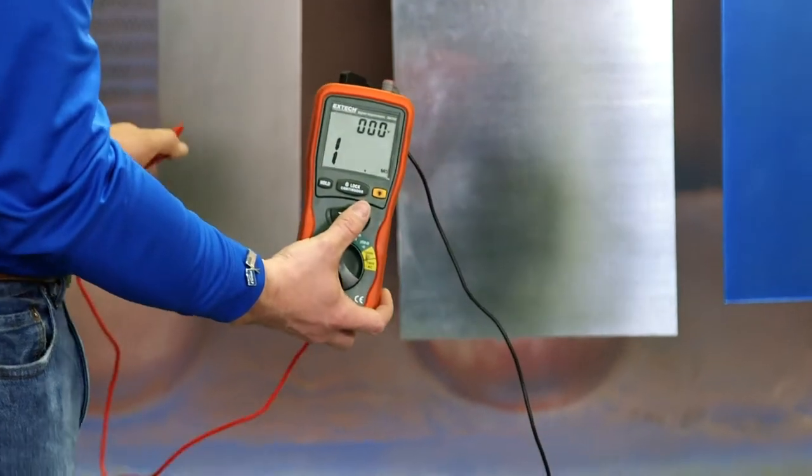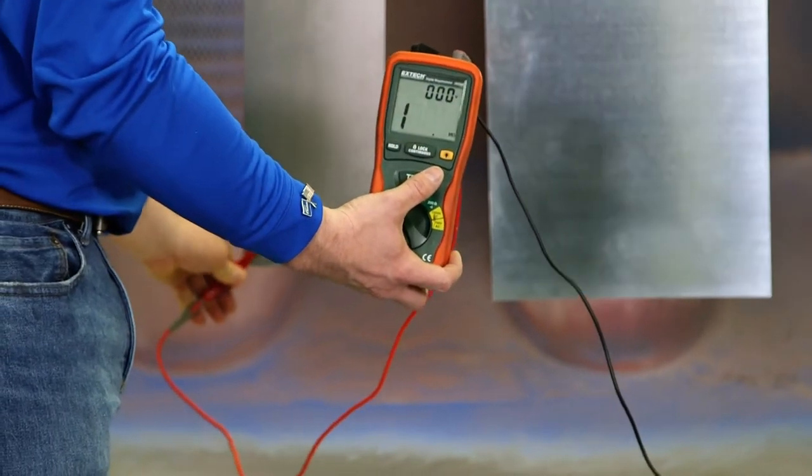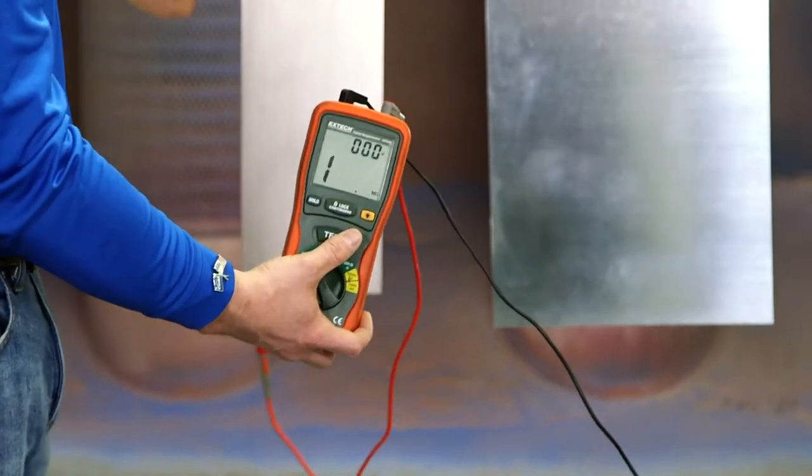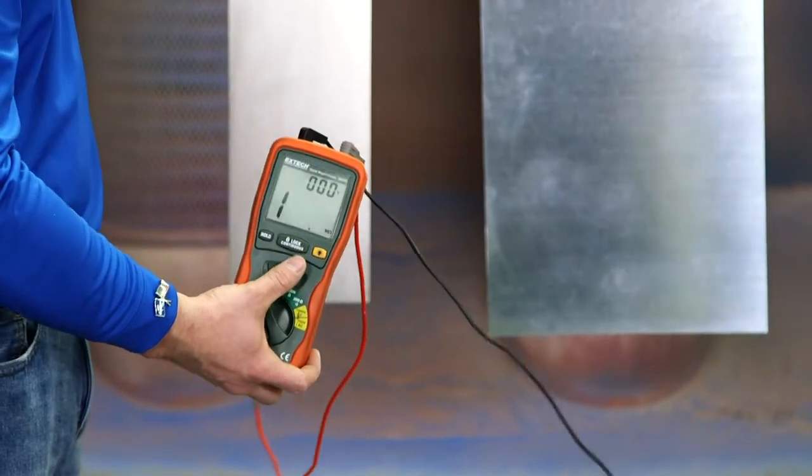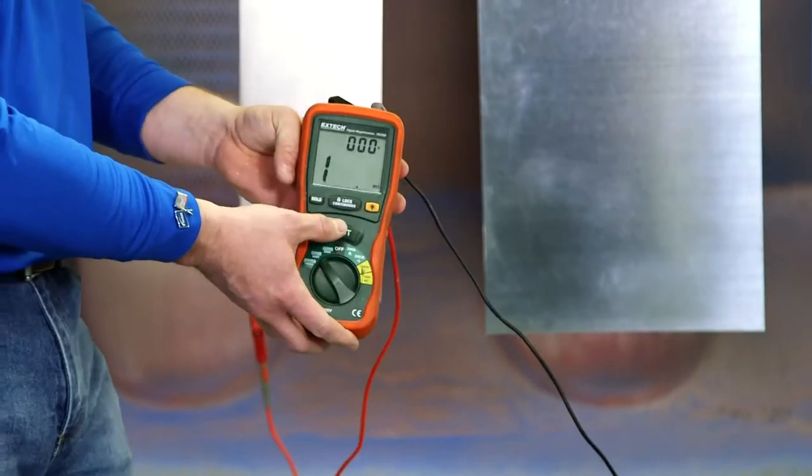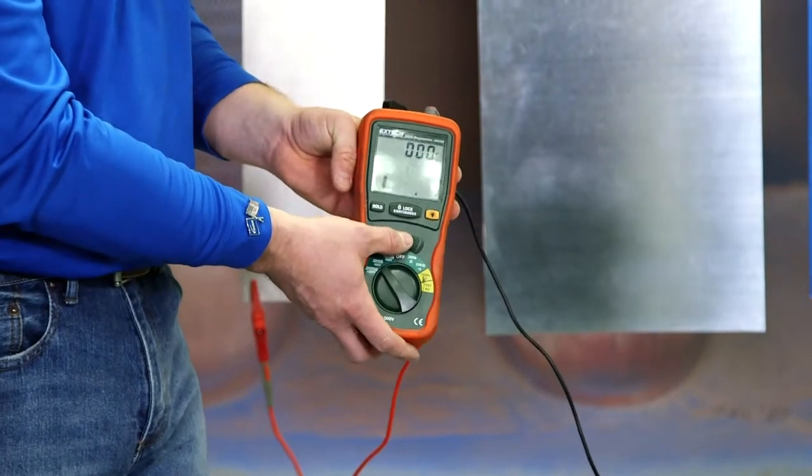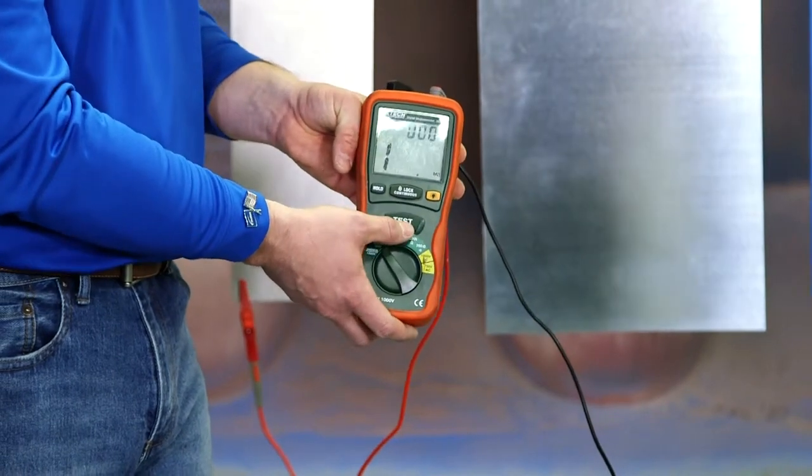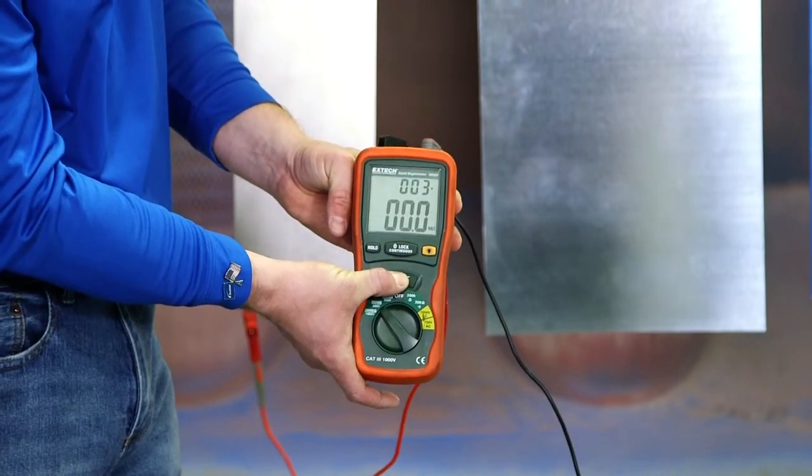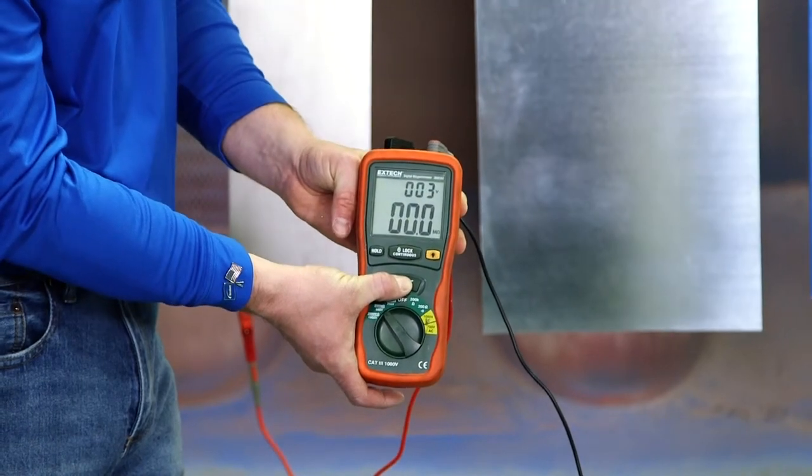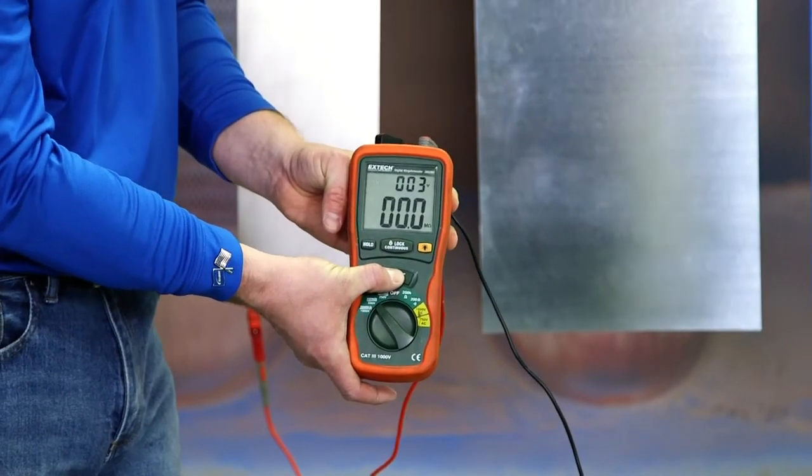To test this we'll clip this to the part. Since this is an unfinished piece of metal with clean hooks, this should test correctly. To show a true ground it needs to be less than one mega ohm. The test shows zero so it passes the grounding test.